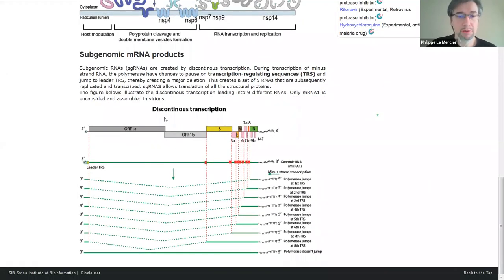This is done by a special feature which looks like splicing, but it's called discontinuous transcription. There are sequences called transcription regulation sequences, or TRS, which are present before the structural open reading frames. When the RNA polymerase will replicate the minus strand, it can stall on this sequence and directly jump to the leader TRS, thereby producing a deletion. The more replication there is, the more these subgenomic RNAs are created. The polymerase can also go through, so it will continue to make the full-length genome as well.